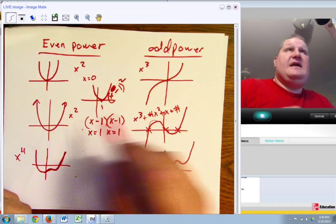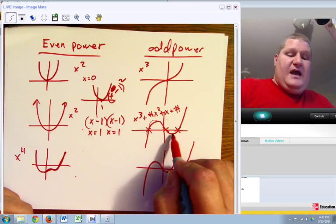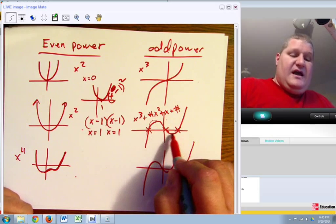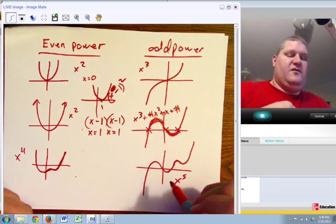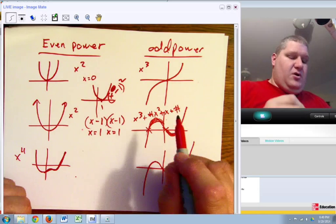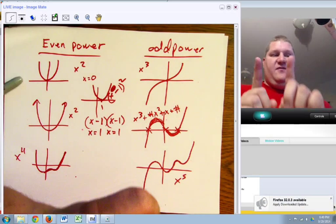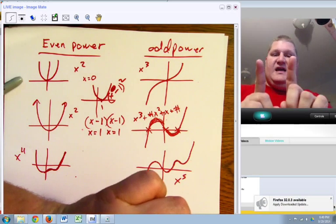But over here we have a power of 3, and I have one place where it turns around, two places where it turns around. Do remember that in even functions the ends have to go the same way.